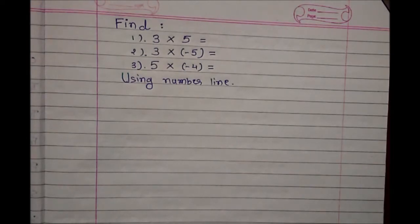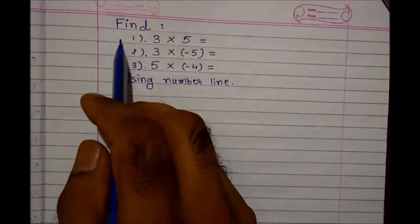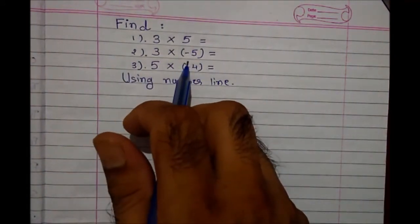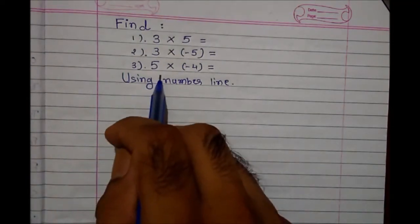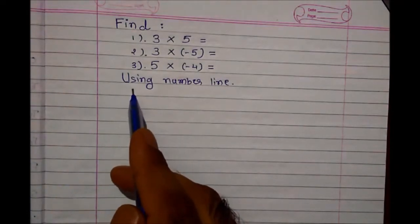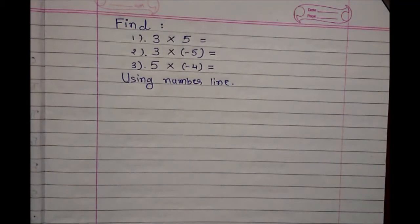Multiplication of integers. We have a question: find 3 into 5, 3 into minus 5, and 5 into minus 4. We have to find out using the number line. So let's solve one by one.